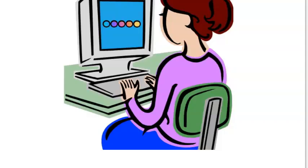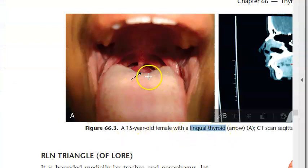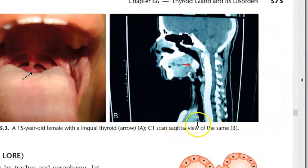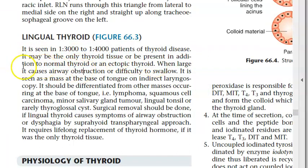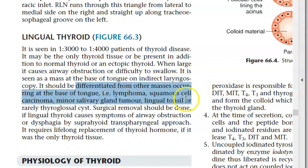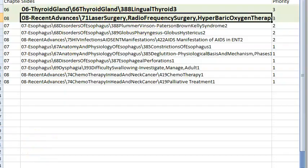Miscellaneous topics: lingual thyroid — indicated by an arrow on CT sagittal view. It may be the only thyroid tissue present, or present in addition to normal thyroid, or an ectopic thyroid. It causes airway obstruction or difficulty swallowing, seen as a mass at the base of tongue on indirect laryngoscopy.